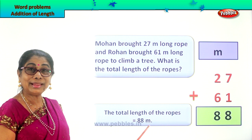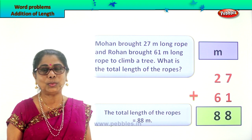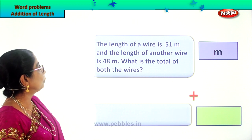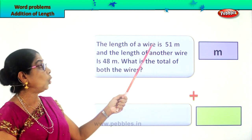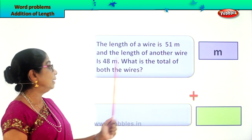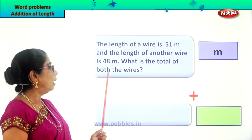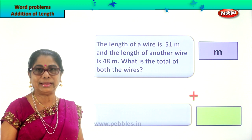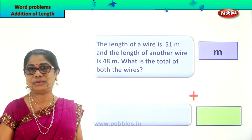Did you enjoy the word problem — finding the total length of rope? Let's look at another word problem. The length of a wire is 51 meters and the length of another wire is 48 meters. What is the total of both the wires? We are going to find the total length of both the wires.